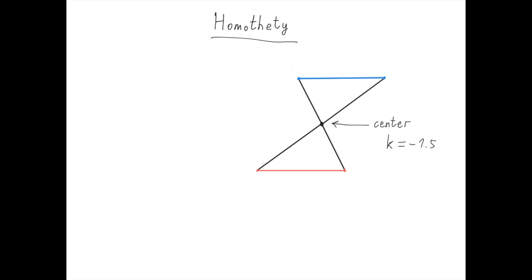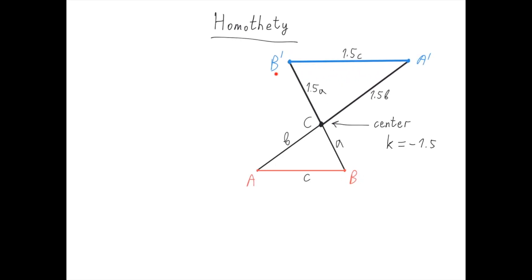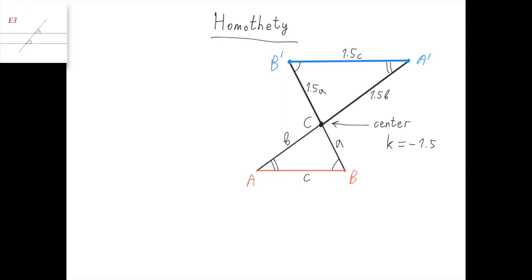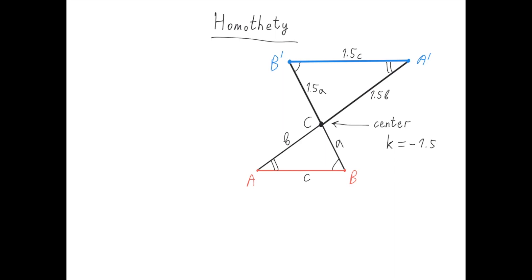And if k was, let's say, negative 1.5, then this is how the homothety would look. The point b would go to b prime, a would go to a prime, and this length would be 1.5 times this length, and this length would be 1.5 times this length. Contrast this with the case when k was positive 1.5. Similarly to positive k's, for negative k's, we again have that the line ab transforms into a line that's parallel to itself, because this angle equals this angle and this angle equals this angle. Essentially, this triangle is similar to this triangle. So homothety preserves angles even if the coefficient is negative.